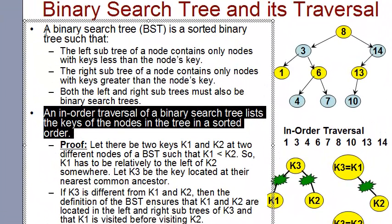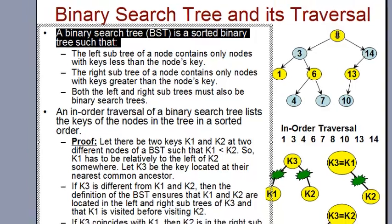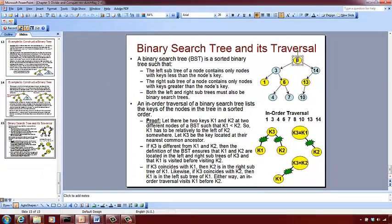In a binary search tree, if you take any node its left subtree is going to have keys that are less than the value of the node. So in this case for 8, all the nodes in its left subtree are going to have value less than 8. Similarly all the nodes in the right subtree will have values greater than that node.